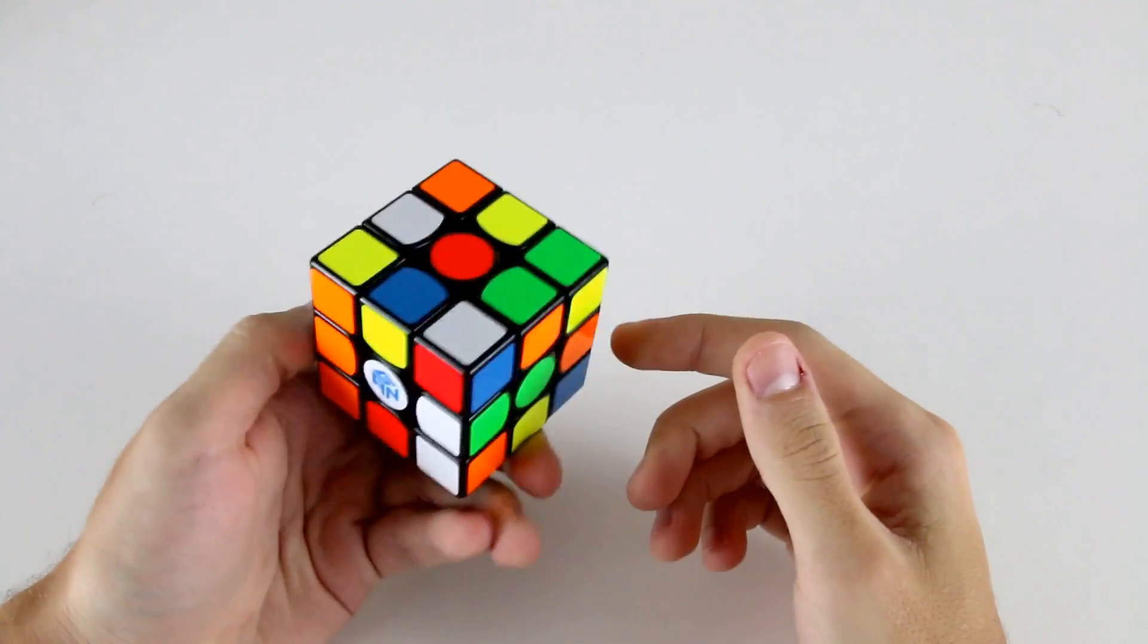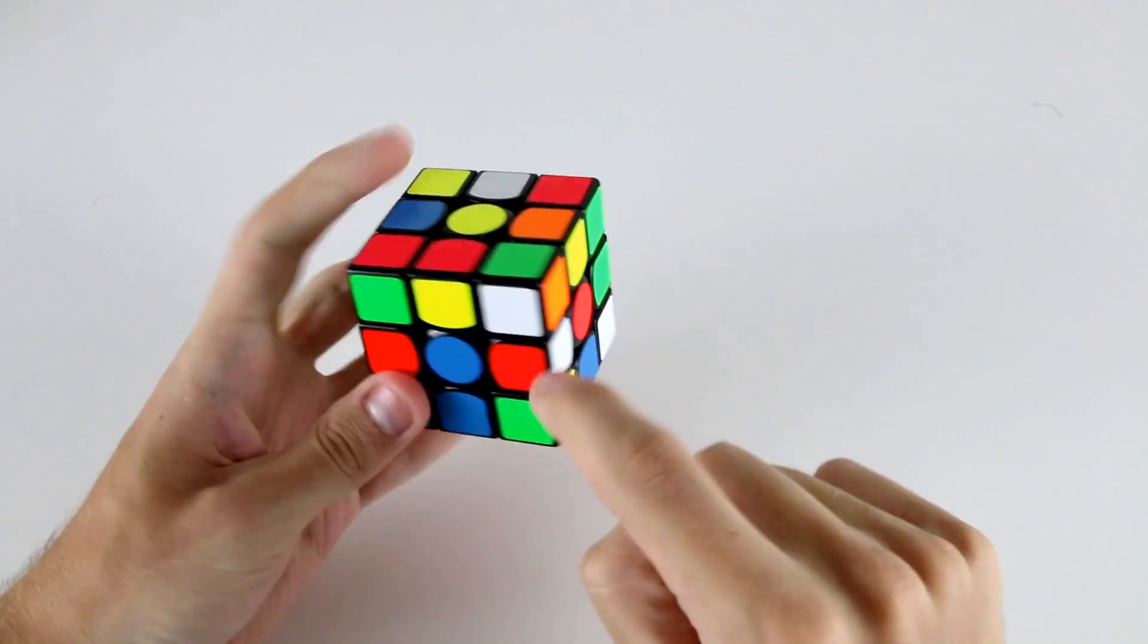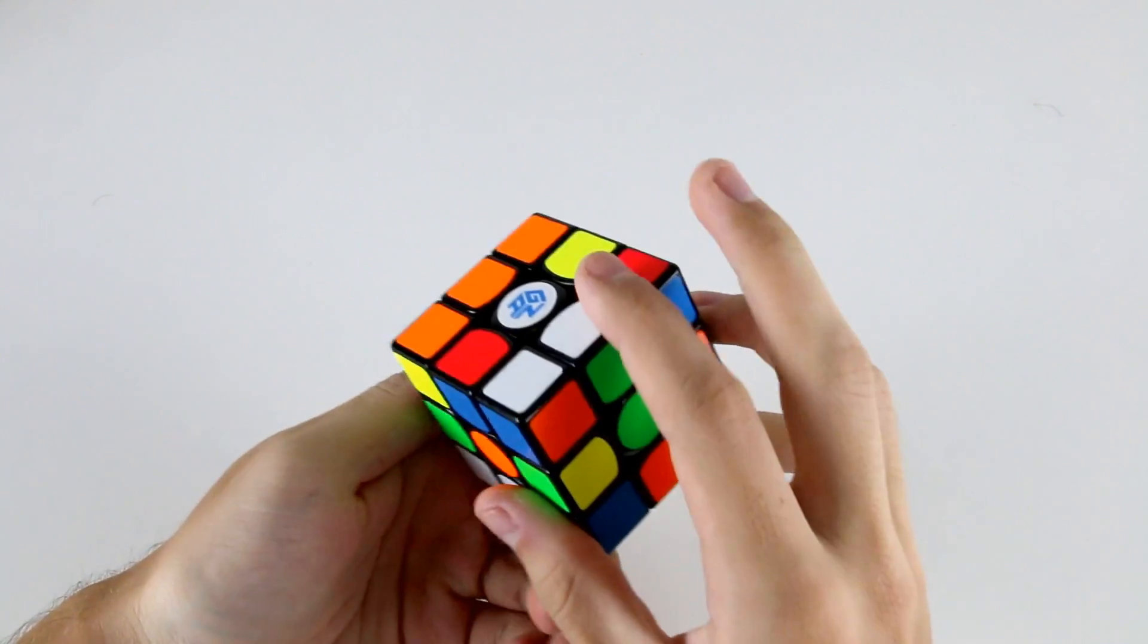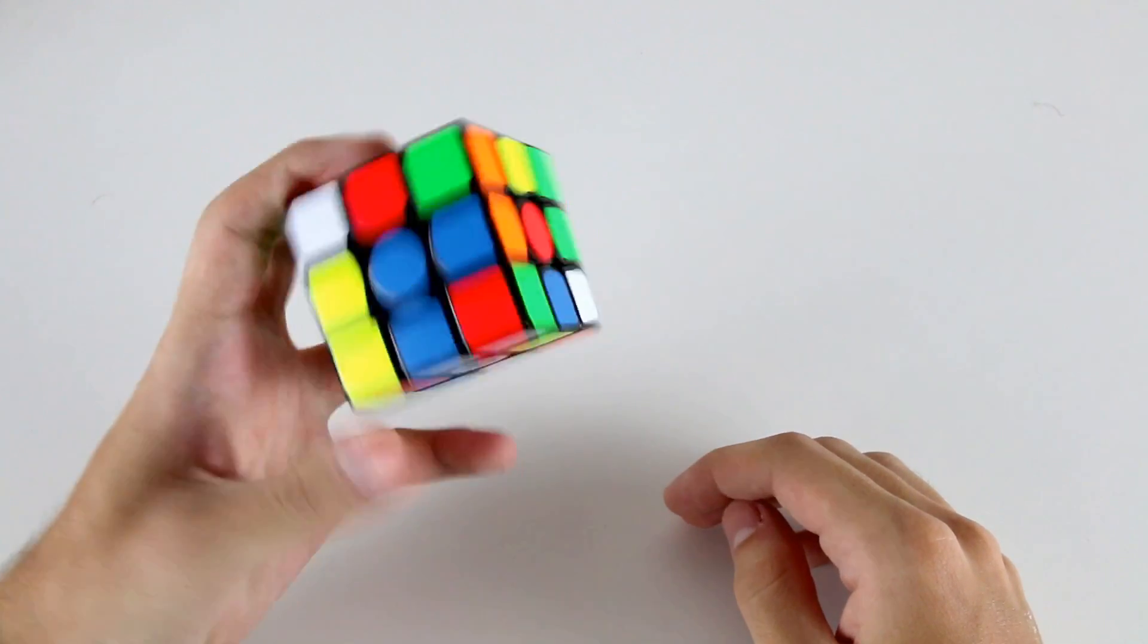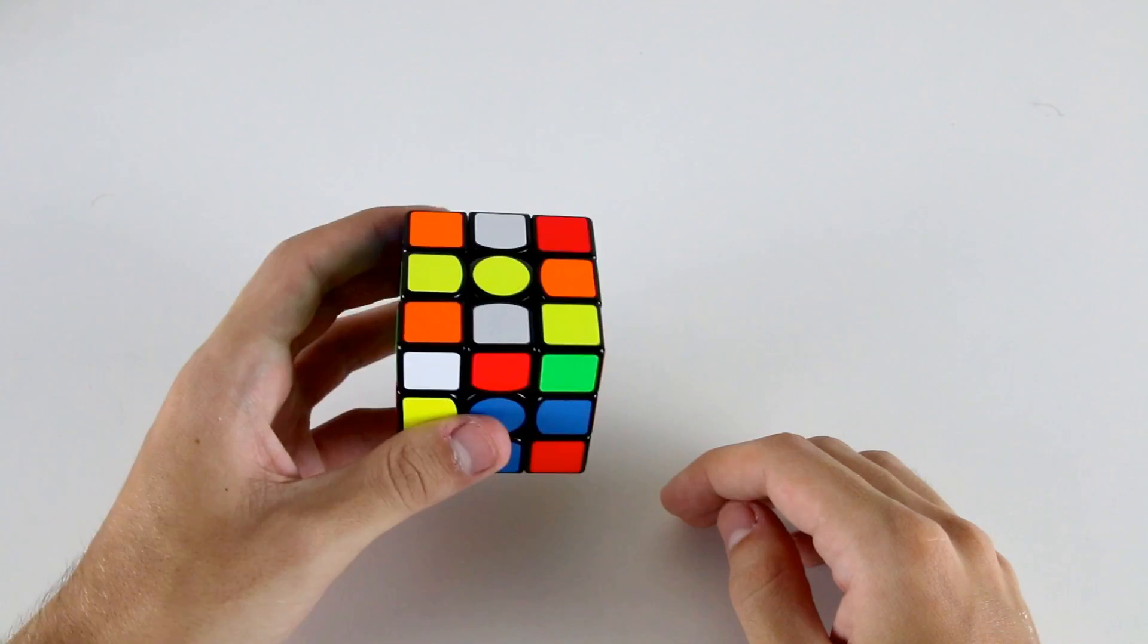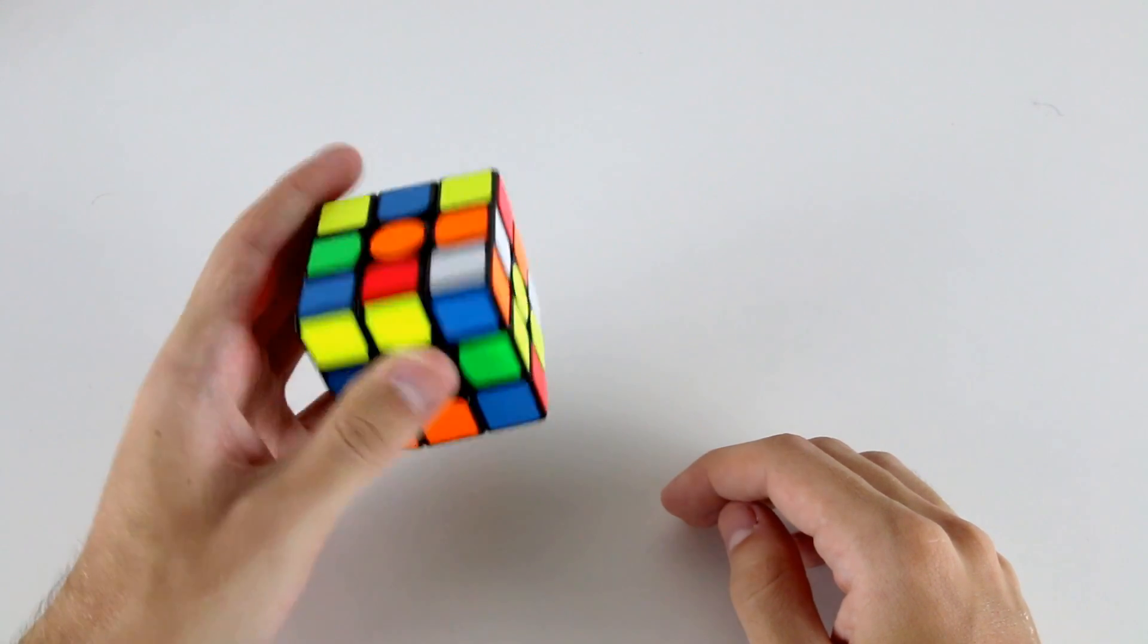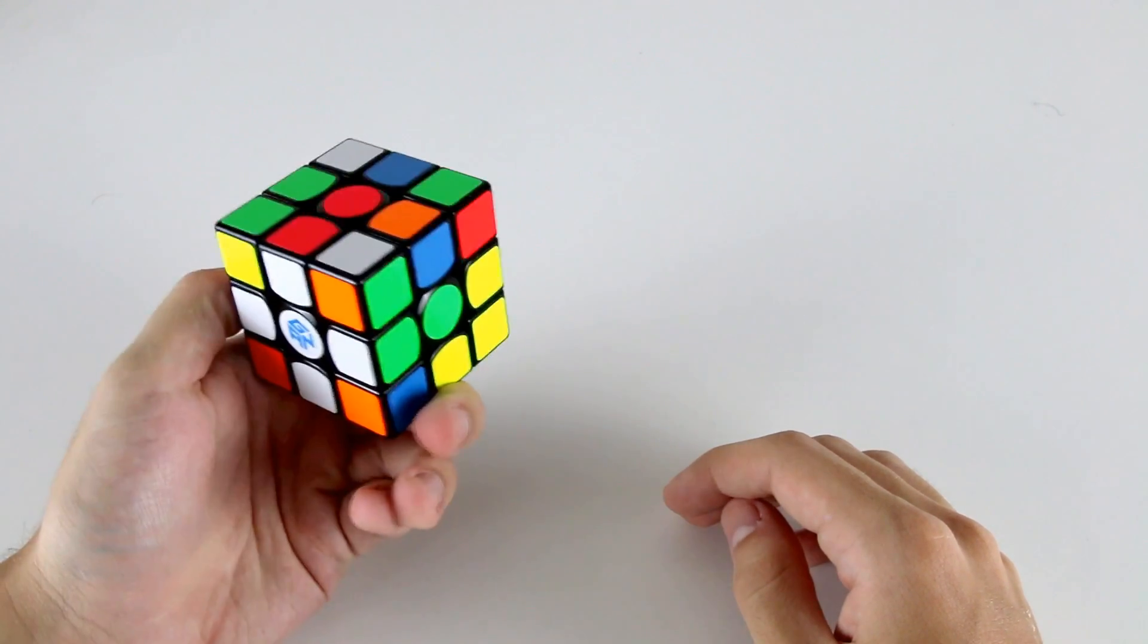Alrighty, for this next cross, our white cross pieces are here, here, here and back here. So we can just do something like l f prime and then re-grip and then do something like u prime r2 l2 like that to do a cross.